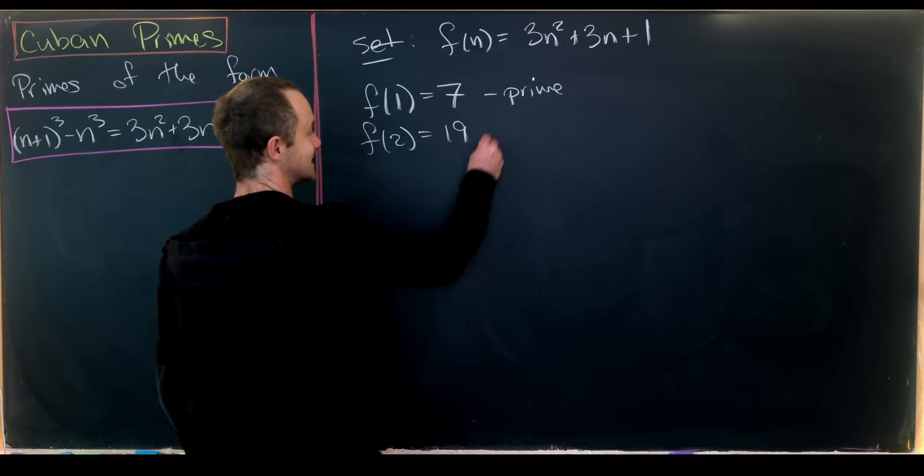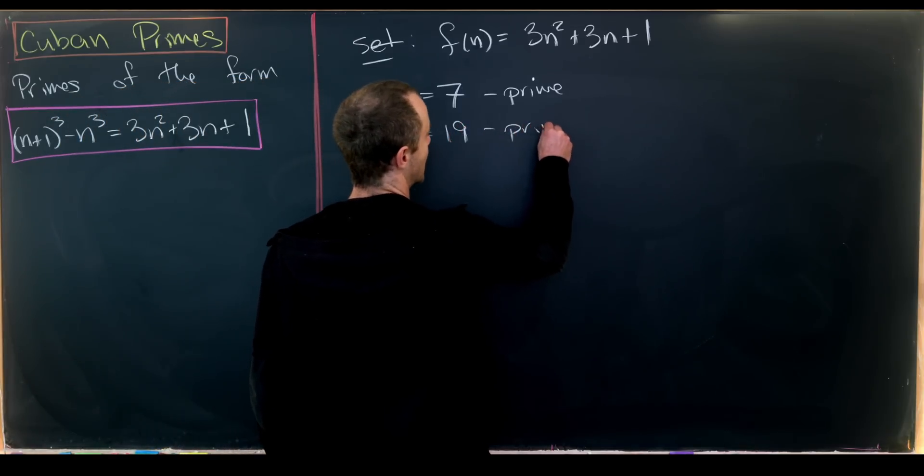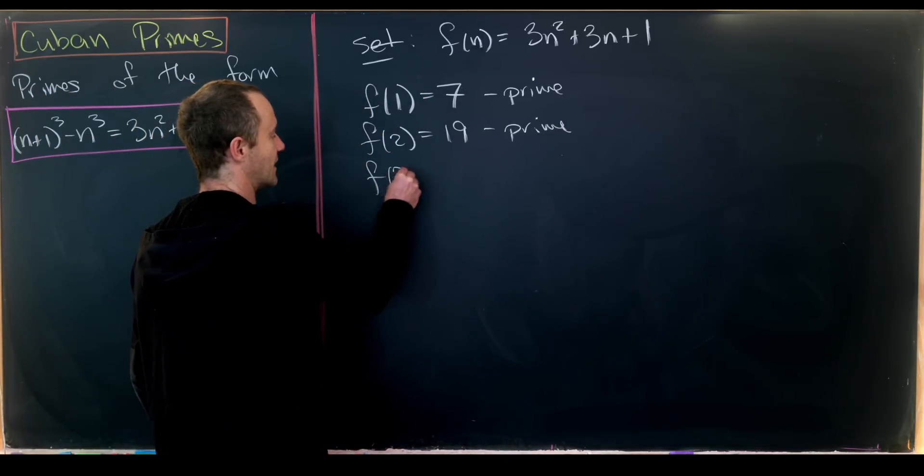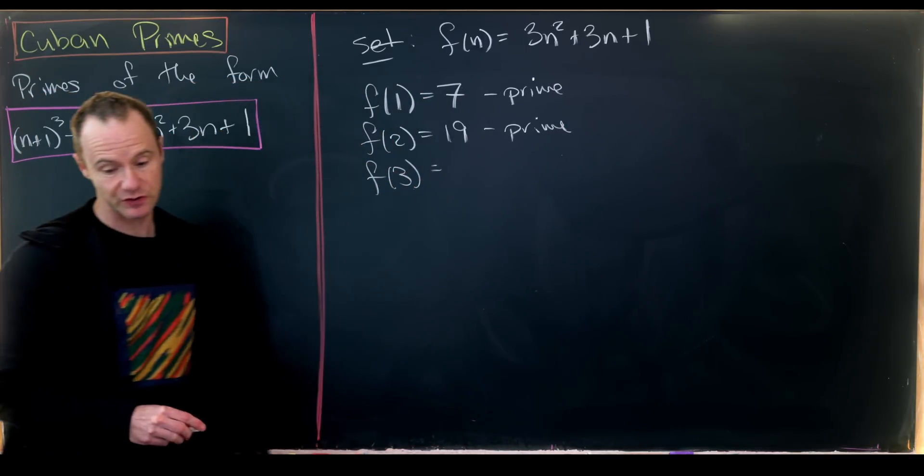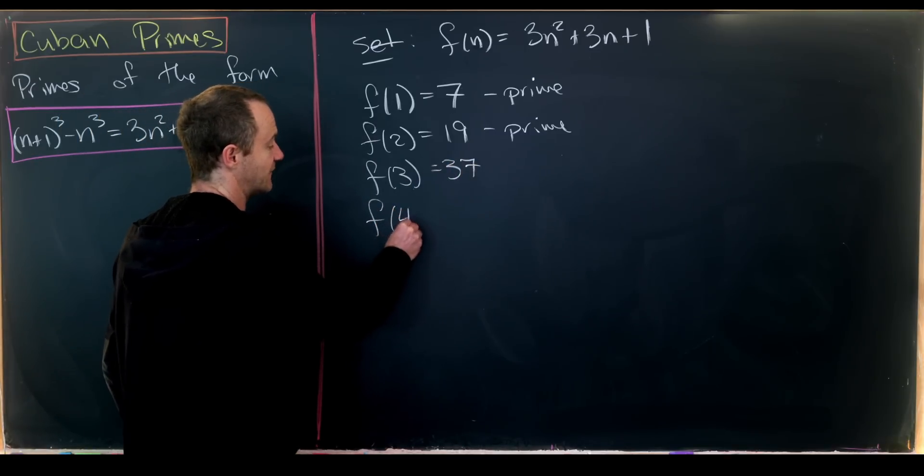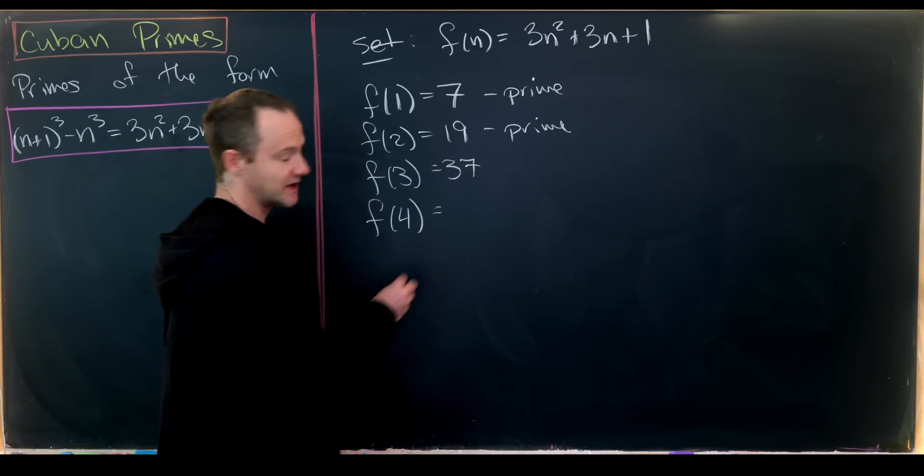f(3) = 37 and f(4) = 61, and both of these are prime as well.